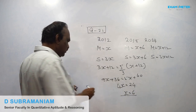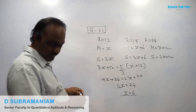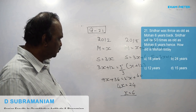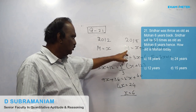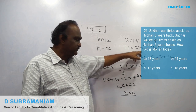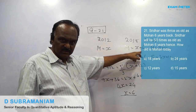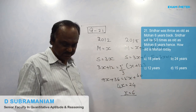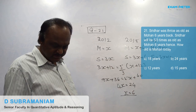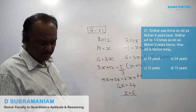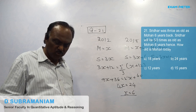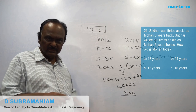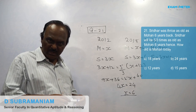So x value comes to 6. We have to find out how old is Mohan today. Today Mohan is x plus 6. x value is 6. 6 plus 6 is 12. So Mohan is 12 years old today. So answer is 12, that is multiple choice C.